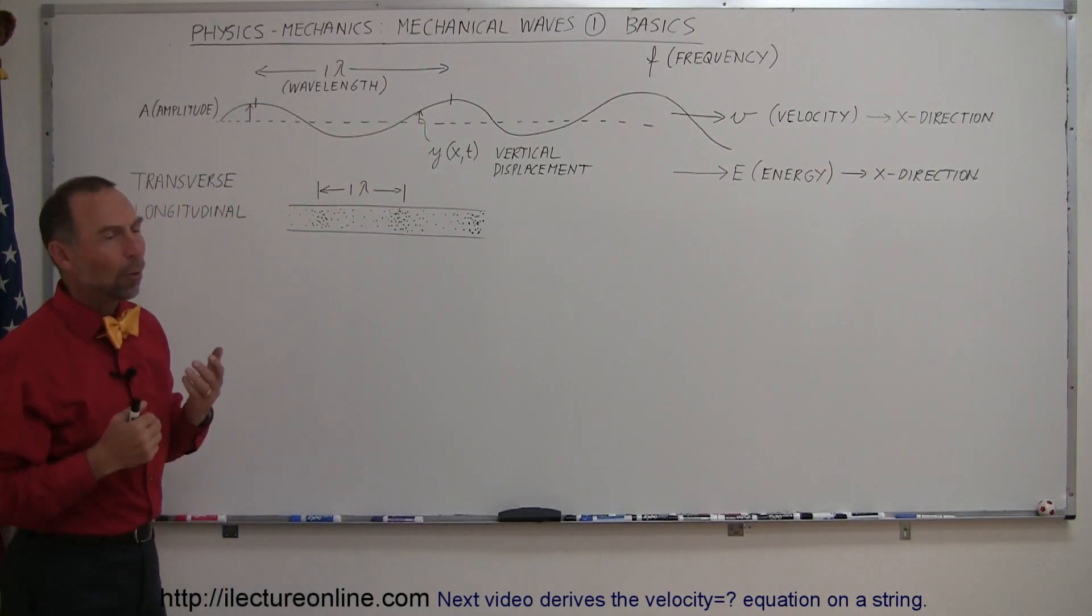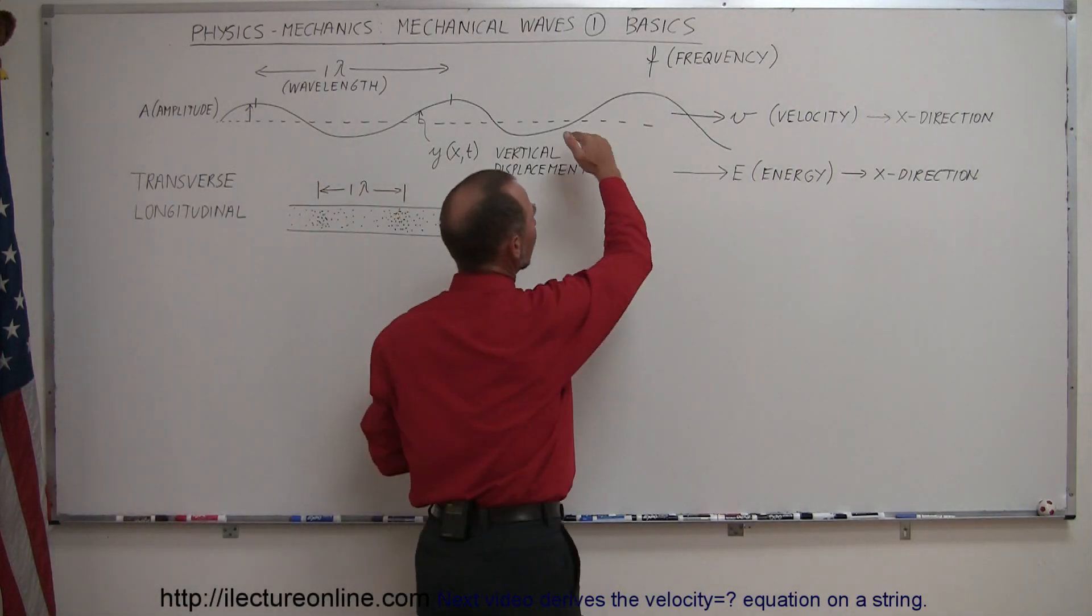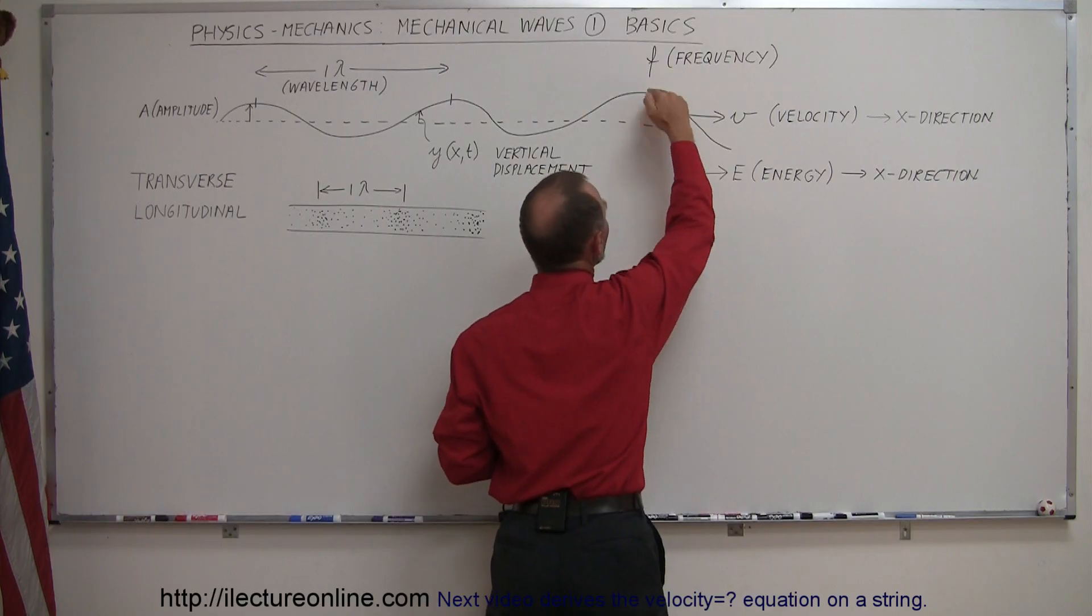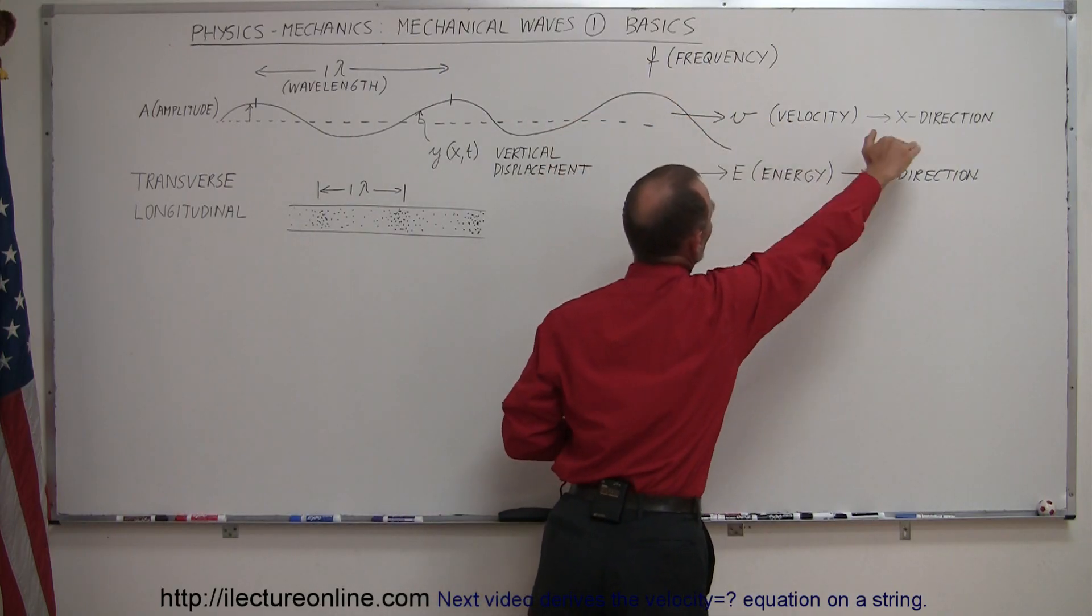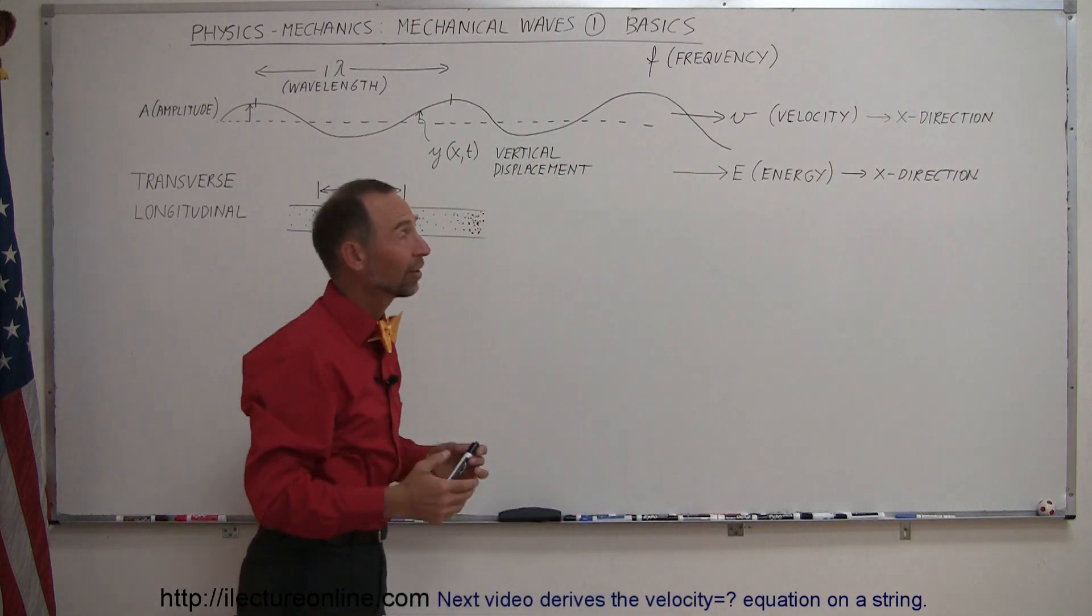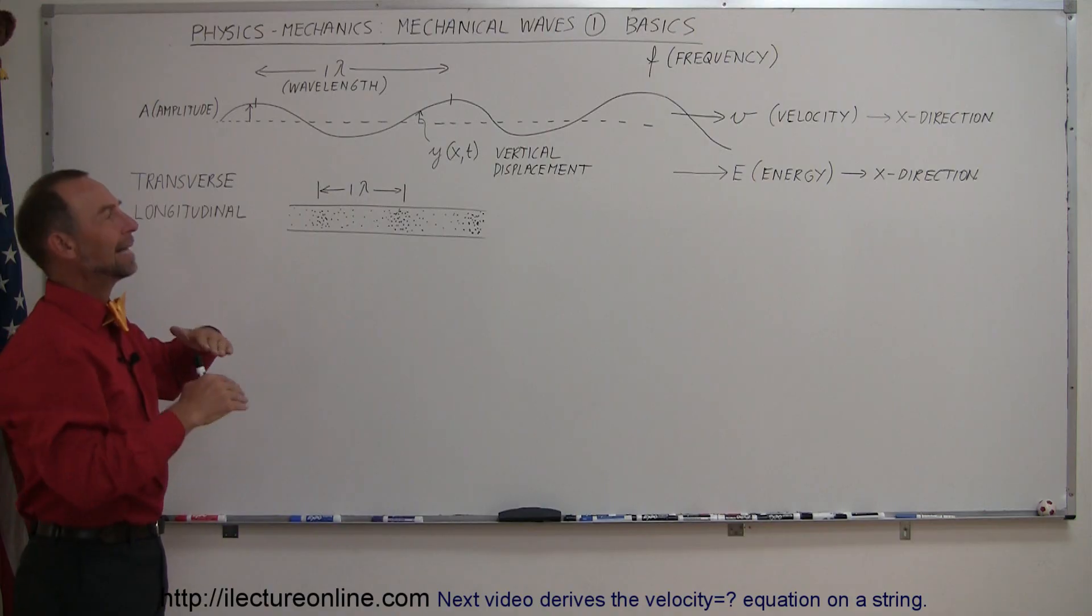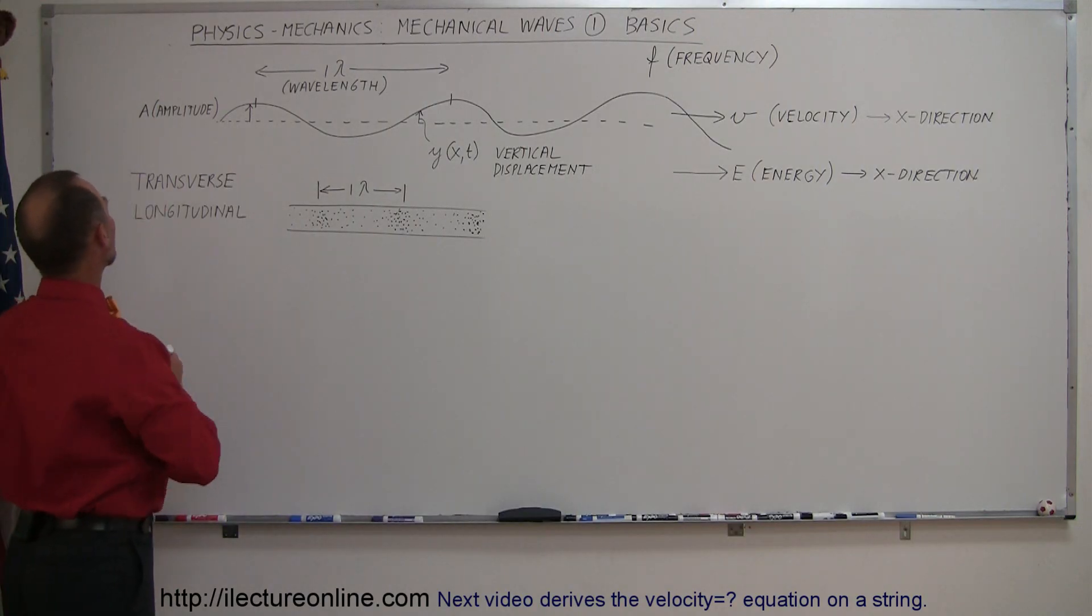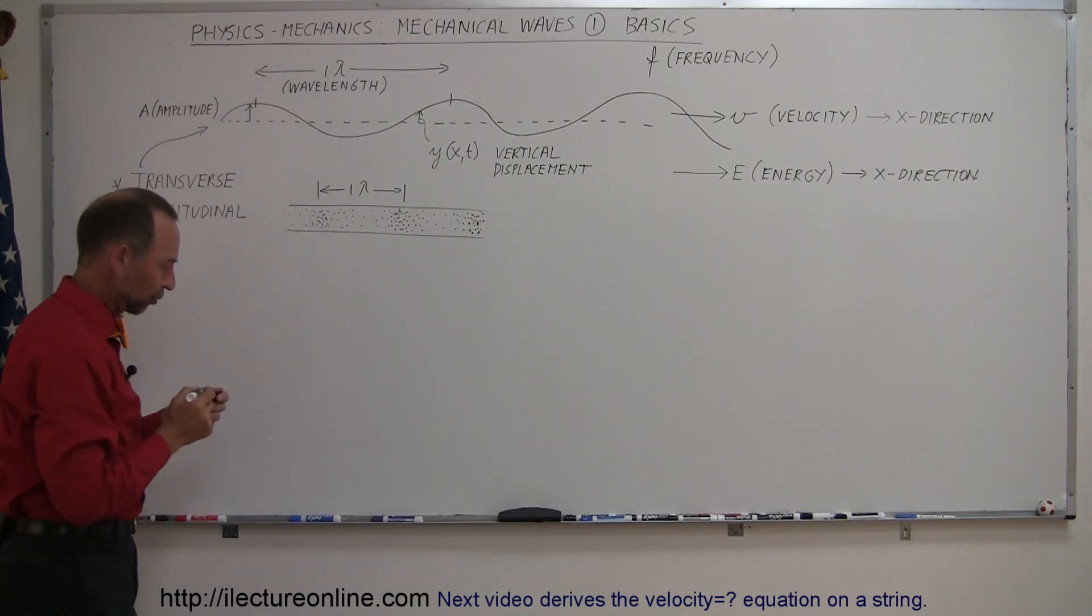Then also, a wave, as it moves, it tends to move in a direction that is perpendicular to the displacement of the wave, like this. So the displacement is like this, but the velocity of the wave is from left to right or from right to left. So the displacement of the wave and the velocity of the wave is actually perpendicular to each other. So that's why we call this a transverse wave.